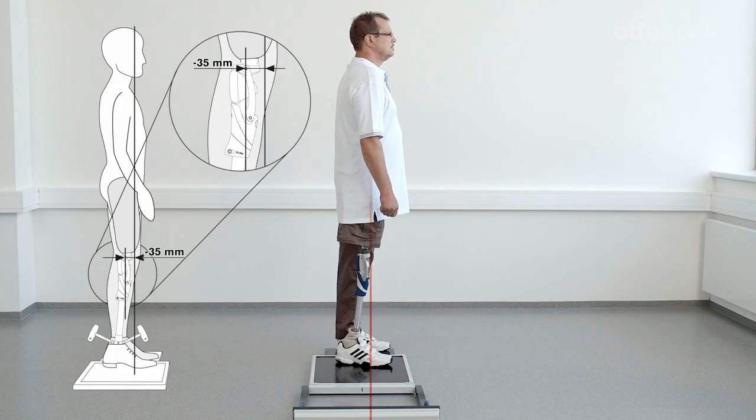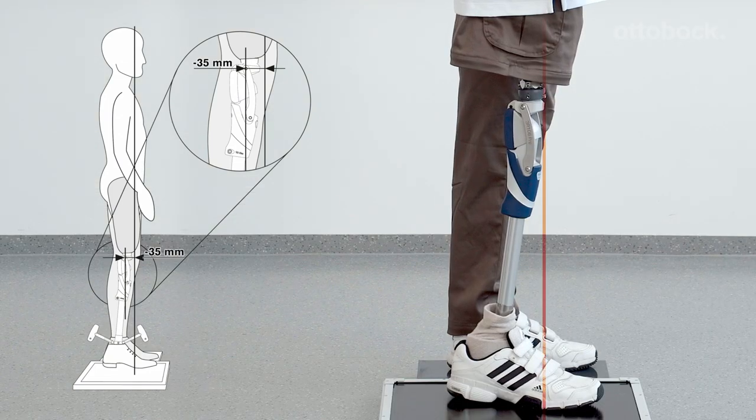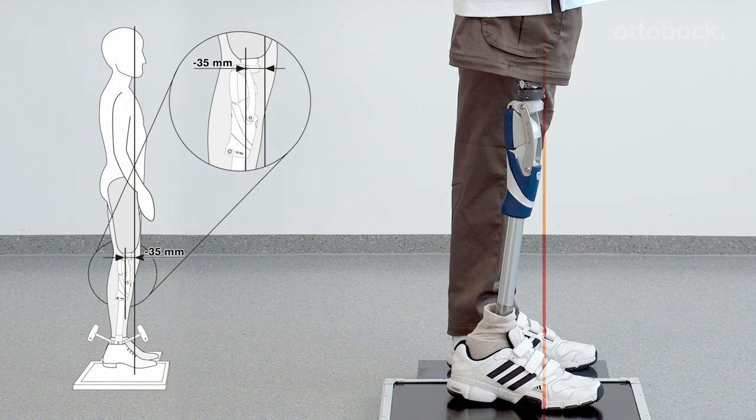The sagittal plane alignment should now be adjusted solely by changing plantar flexion so that the load line runs about 35 millimeters in front of the anterior upper knee axis.